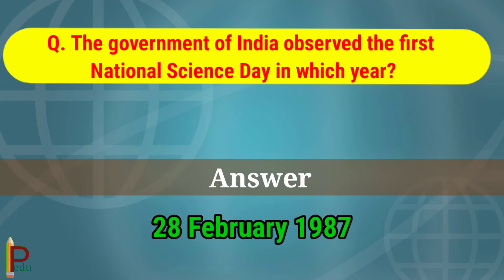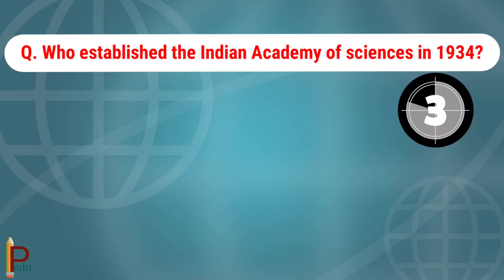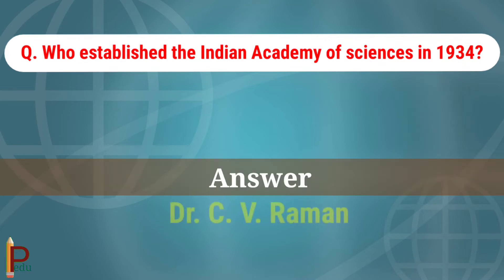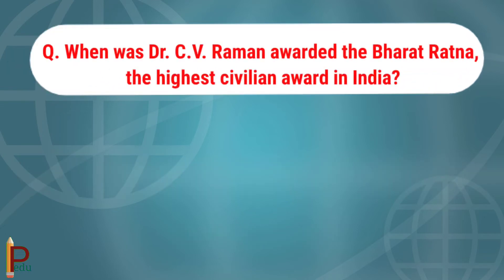The government of India observed the first National Science Day in which year? The answer is 28th February 1987. Who established the Indian Academy of Sciences in 1934? The answer is Dr. C.V. Raman.